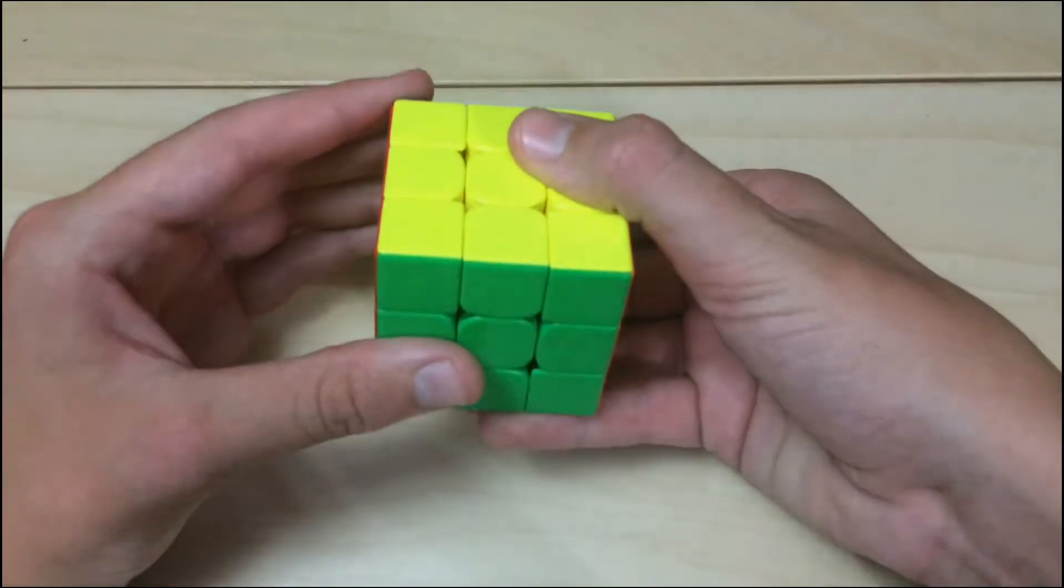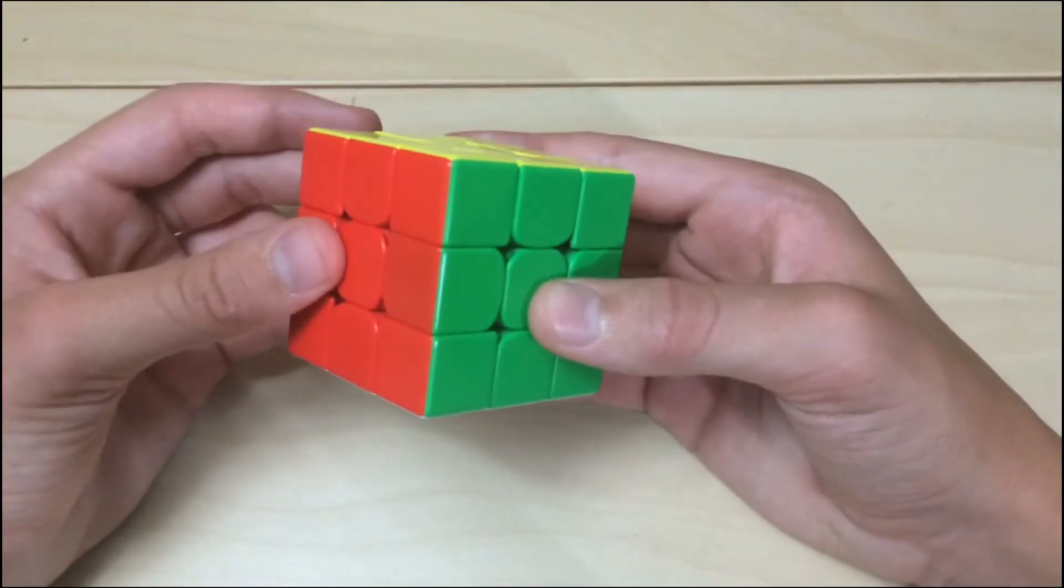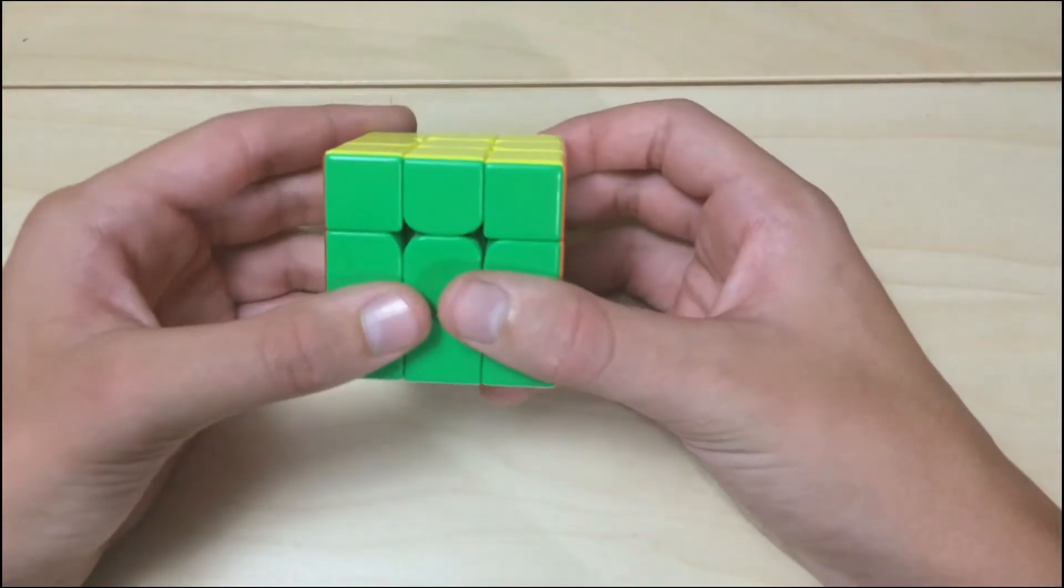And then we have front, U for up, D for down, B for back, R for right, and L for left. That's pretty easy.